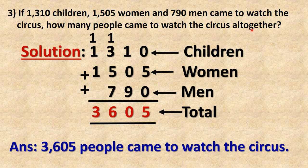The information given to us: 1,310 children, 1,505 women, and 790 men. What we are supposed to find out: total number of people who came to watch the circus altogether. Method: addition — plus sign. Solution: 1,310 children plus 1,505 women plus 790 men — all these numbers we will add together.